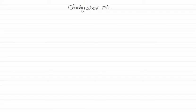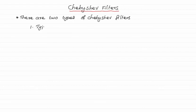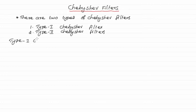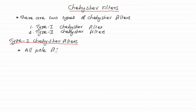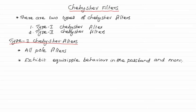Chebyshev filters come in two types: Type-1 and Type-2 Chebyshev filters. Type-1 filters are all-pole filters and exhibit equiripple behavior in the passband and monotonic characteristics in the stopband.